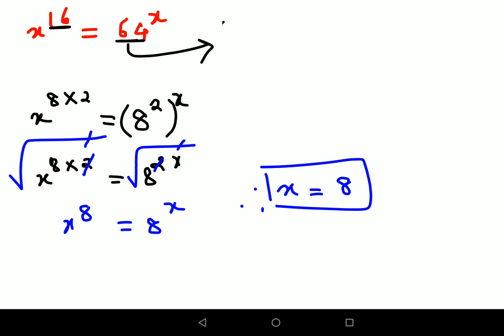So here what happens is x raised to 16, we have 8 raised to 16. And here in your RHS we have 64 raised to 8.